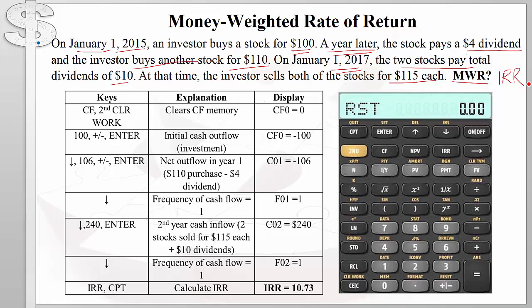Let's look at our table, which tells us how to punch in these numbers on our financial calculator. We start by hitting the cash flow button, then Second, then Clear Work — this will clear the cash flow memory. Your calculator should now display CF0 = 0. Next, we hit 100, minus, Enter. This shows that the initial cash outflow was $100 — we bought the stock for $100.